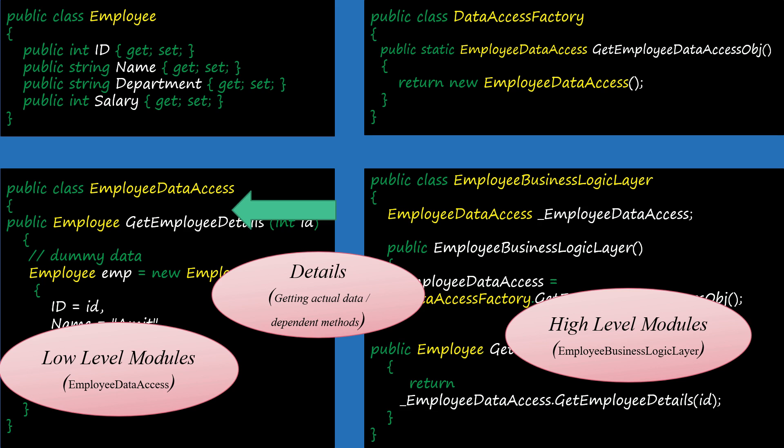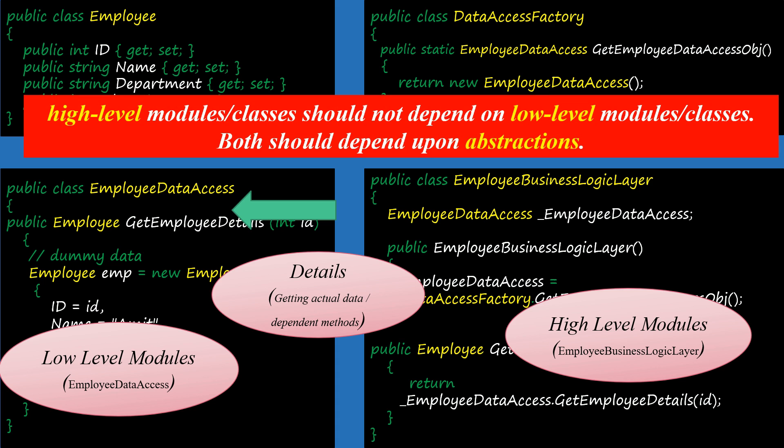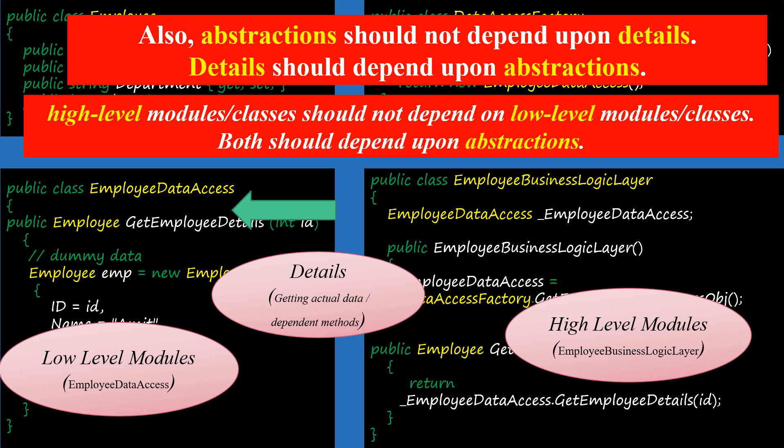To recap the definition: a high-level class or module should not depend upon low-level classes or modules. In our project, the high-level class EmployeeBusinessLogicLayer is directly dependent on the low-level class EmployeeDataAccess. Another very important condition is that both should depend upon abstraction, and also abstractions should not depend upon details, but details should depend upon abstraction. This we will cover in just a bit.